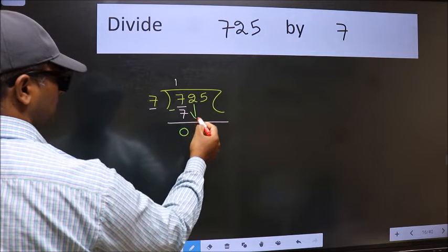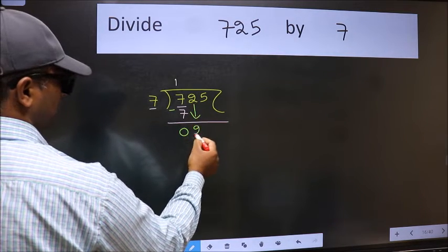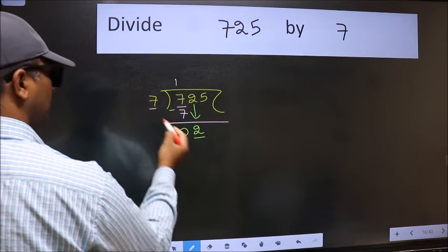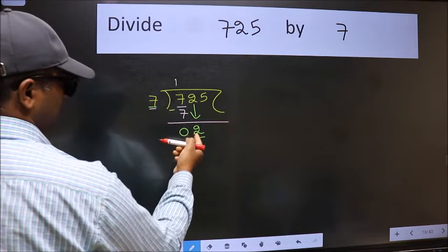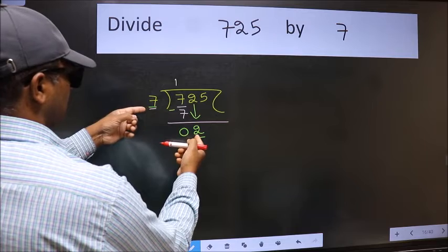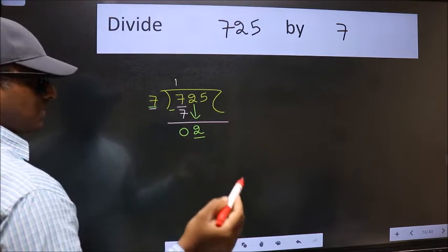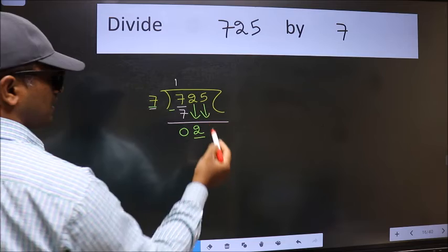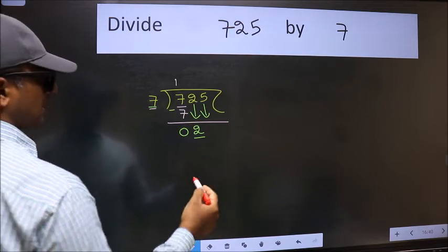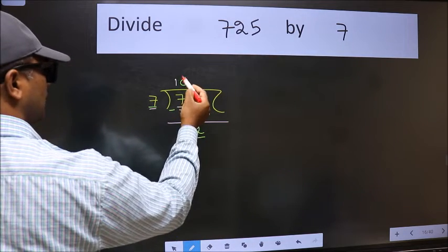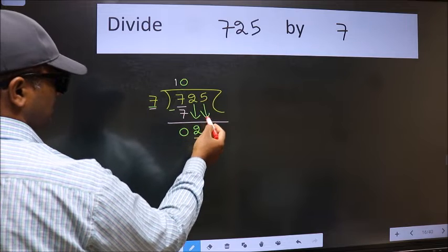After this, bring down the beside number. So 2 down. Now here we have 2 and here 7. 2 is smaller than 7, so we should bring down the second number. And the rule to bring down the second number is we should put 0 here. Then only we can bring this number down.